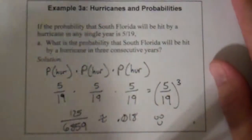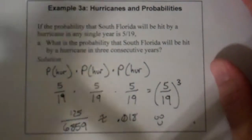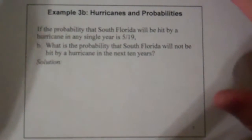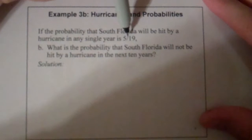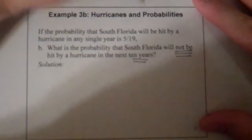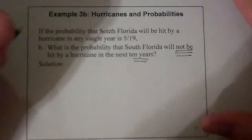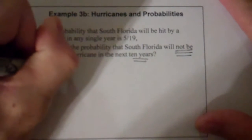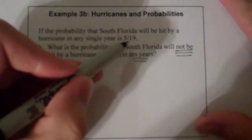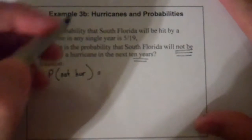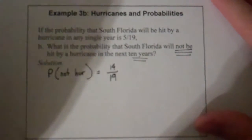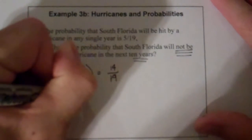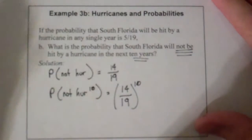That makes me very happy because I live in central Florida, where it's even less likely to get a hurricane. Now let's look at something a little different. If a hurricane could hit with five out of nineteen, what's the probability that it will not hit in the next ten years? The probability of NOT a hurricane is one minus five over nineteen, which gives you fourteen over nineteen. So the probability of not a hurricane in ten years is fourteen over nineteen raised to the tenth power.